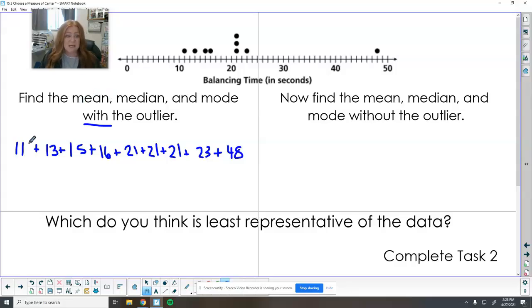To find the mean, I add these all up and divide by the students. One, two, three, four, five, six, seven, eight, nine students. To find the median, I'm going to match them up until I get to the middle. And then the mode is the one that happened the most, which is 21.